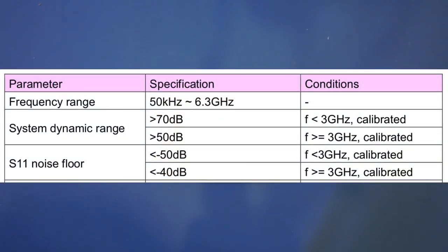We can see this in the specs provided. If you take a look at the specs provided here, you will see that the system dynamic range is greater than 70 decibels at frequencies lower than 3 gigahertz. As soon as the frequency changes to be above 3 gigahertz, that system dynamic range drops to be just above 50 decibels. The same happens to S11 noise floor as well. You can see that for frequencies below 3 gigahertz the noise floor is below minus 50 decibels, and when the frequency goes above 3 gigahertz the noise floor is also raised by 10 decibels.